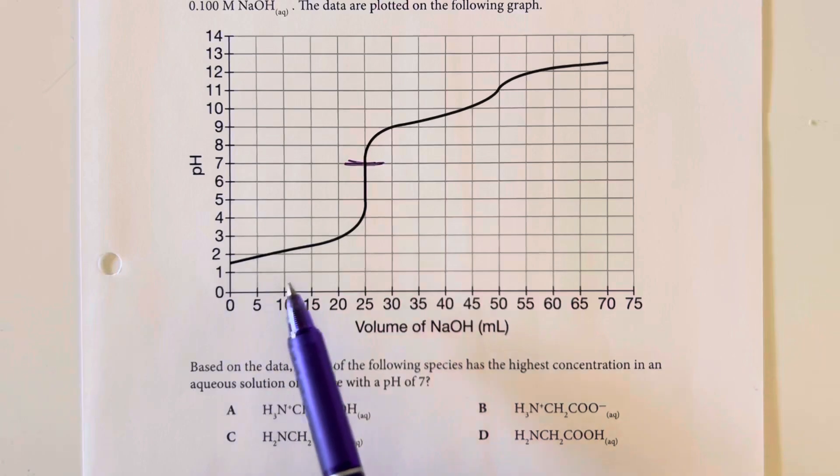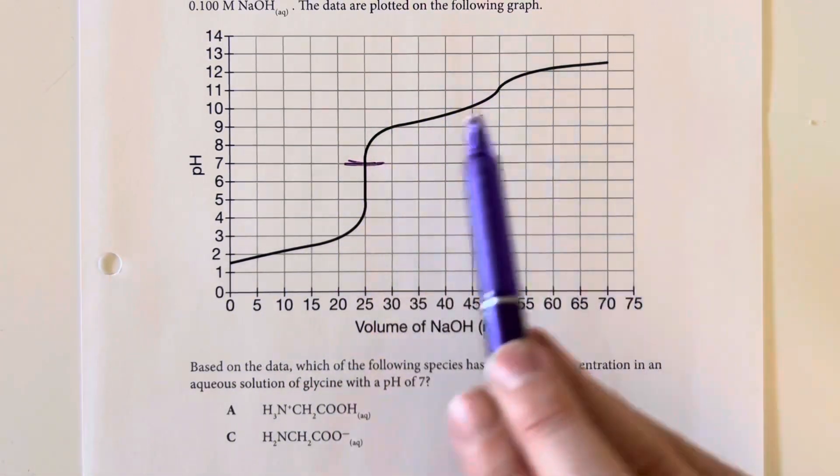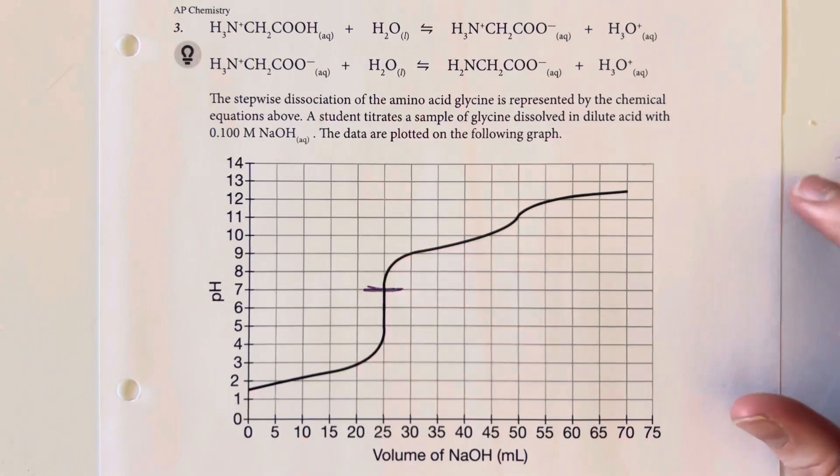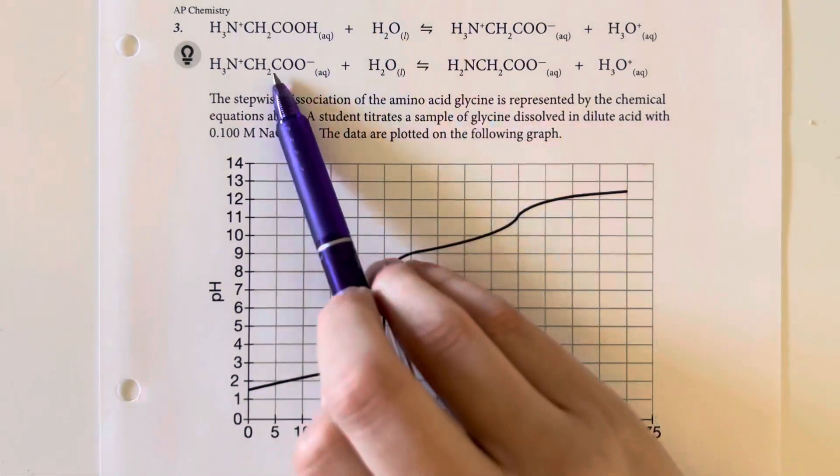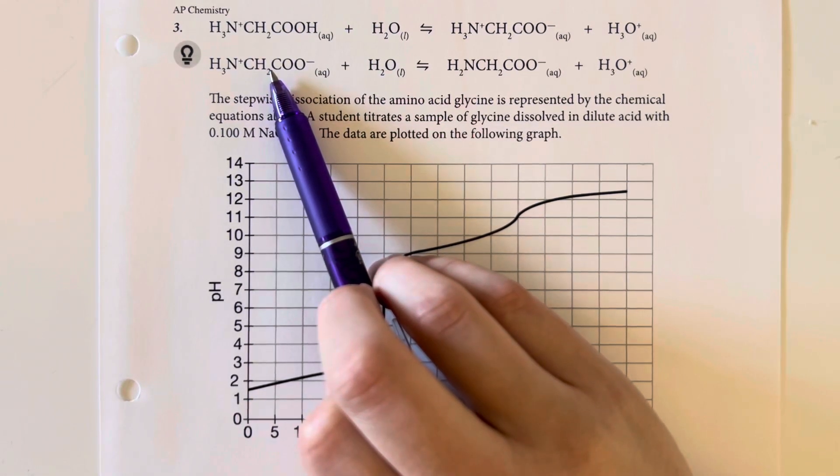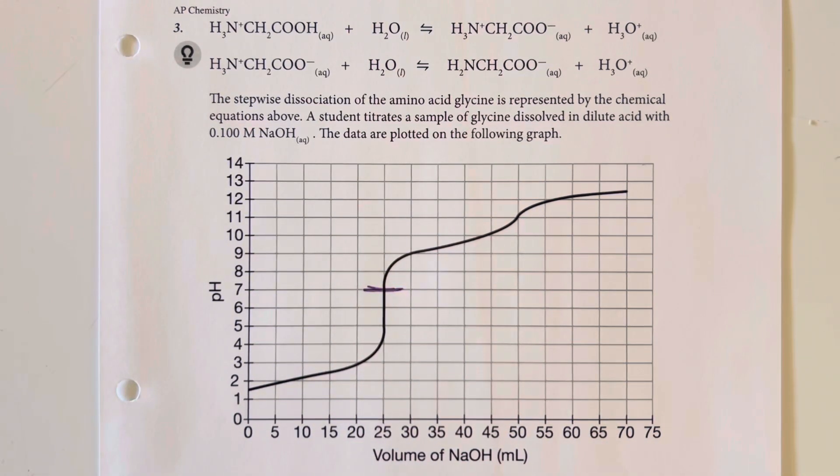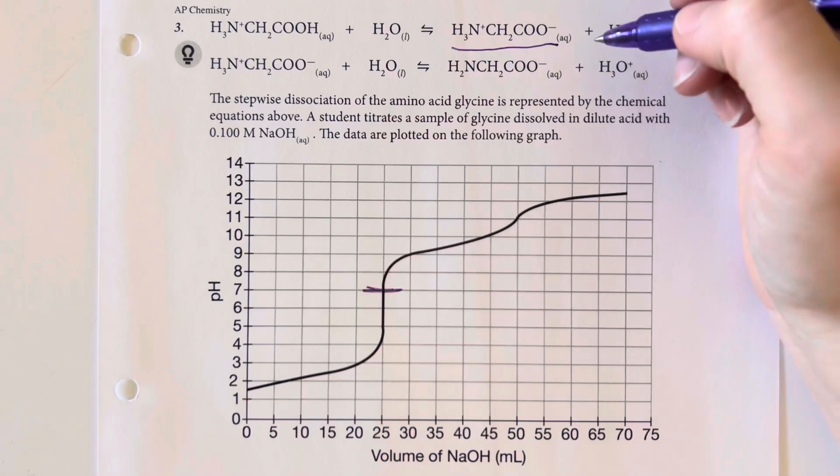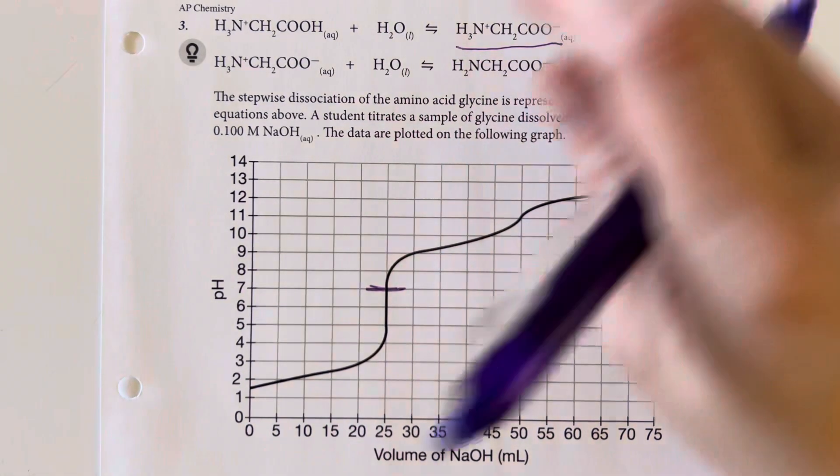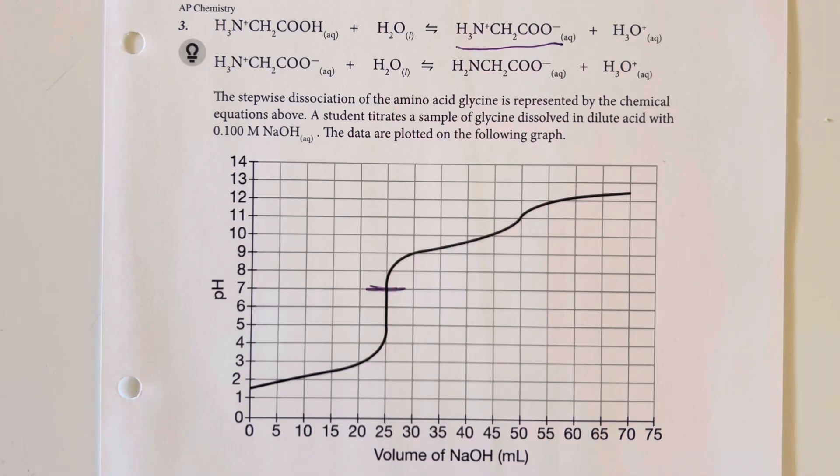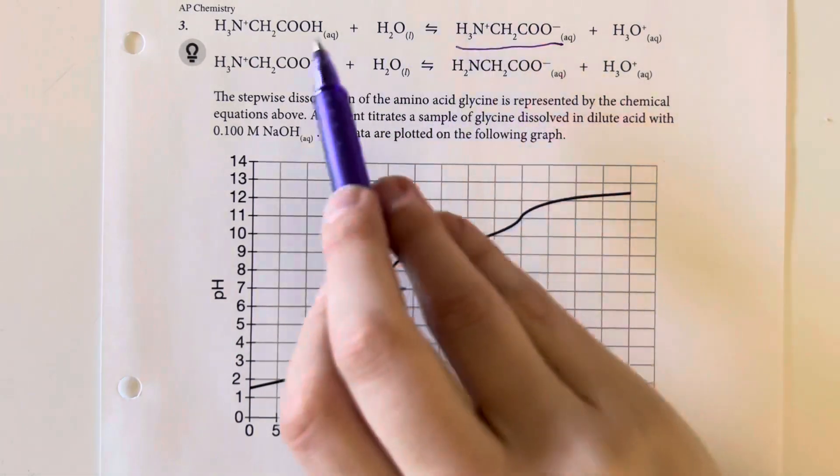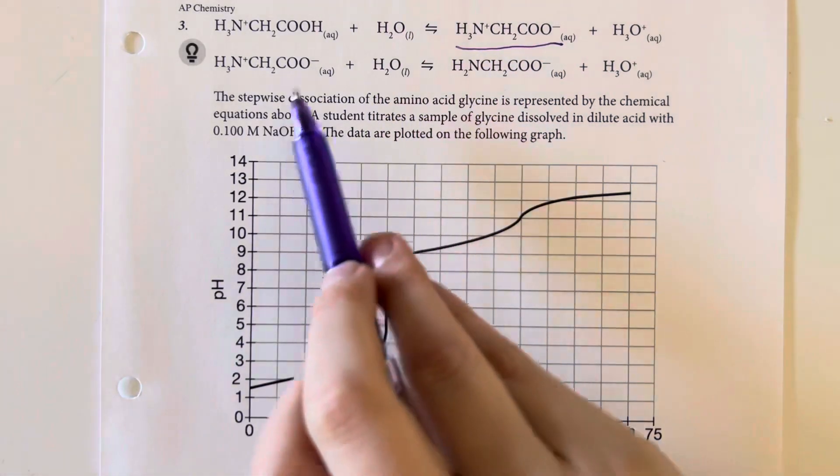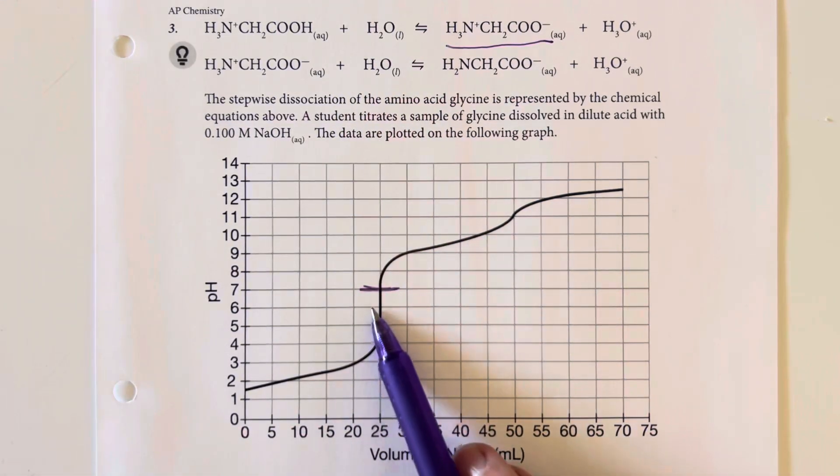We're adding the sodium hydroxide, which eventually is going to get us to dissociate, and then suddenly we have much more of our second stepwise element here starting to appear. This is where we have produced the most of the first deprotonation of the glycine molecule, and the one proton removed glycine is going to stick around for the majority of this portion here.